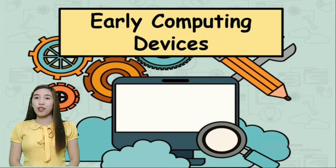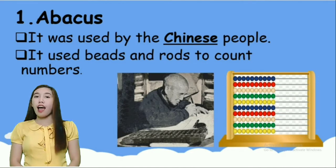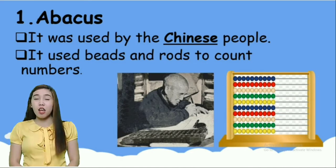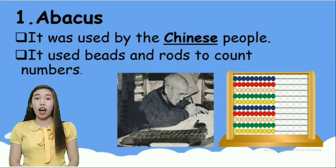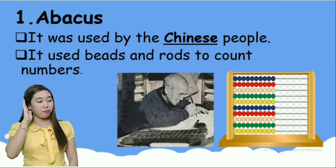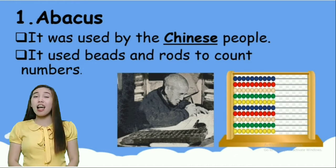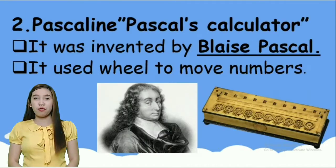Here are the early computing devices. Number one, abacus. Abacus is used by the Chinese people. It used beads and rods to count numbers. Again, what is this? Very good! This is abacus.